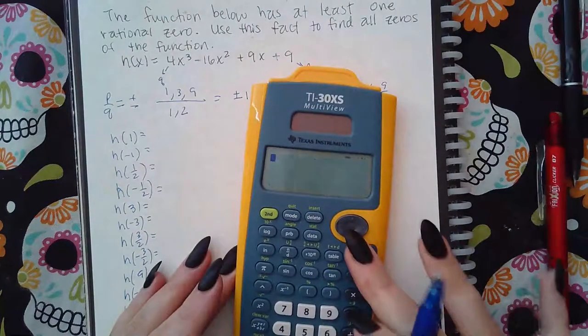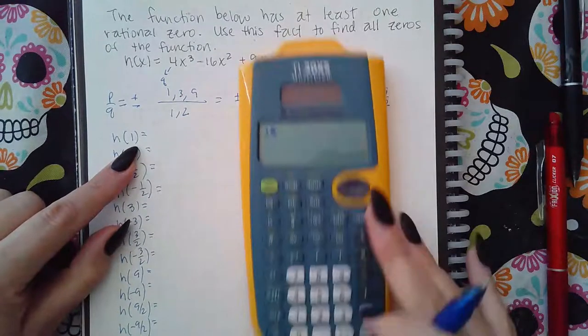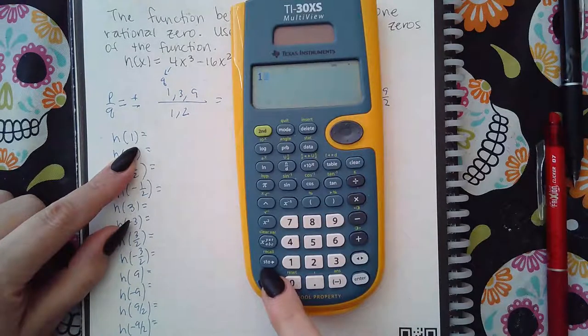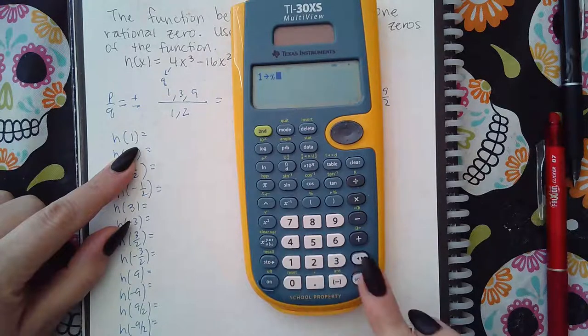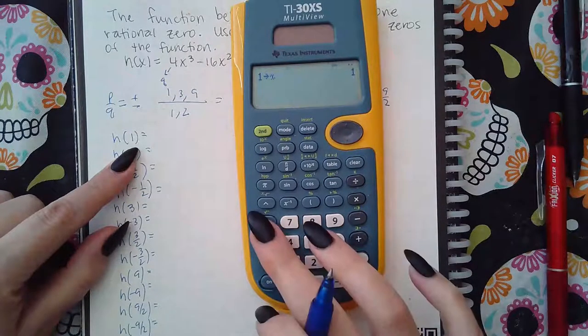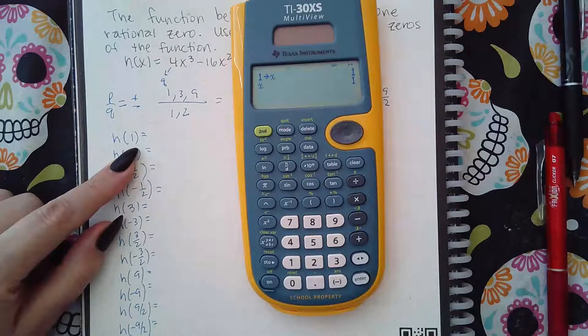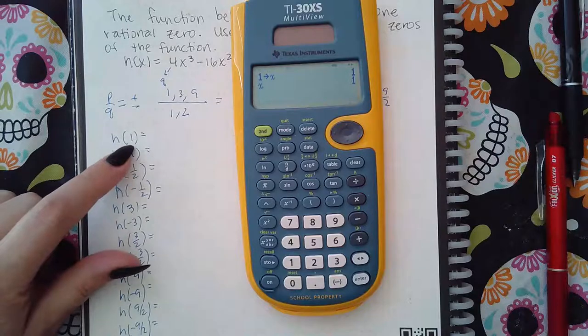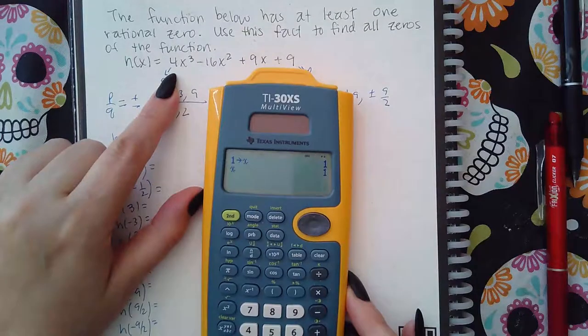What you do first is you have to set the X value first. So I'm going to say 1, and then I'm going to hit the store button. I'm going to hit the variable X. I'm going to hit enter. So every time I hit the X key, it automatically thinks that X is 1. The first thing you do is set your first X value. Then what you do is you write the function in there with X's.